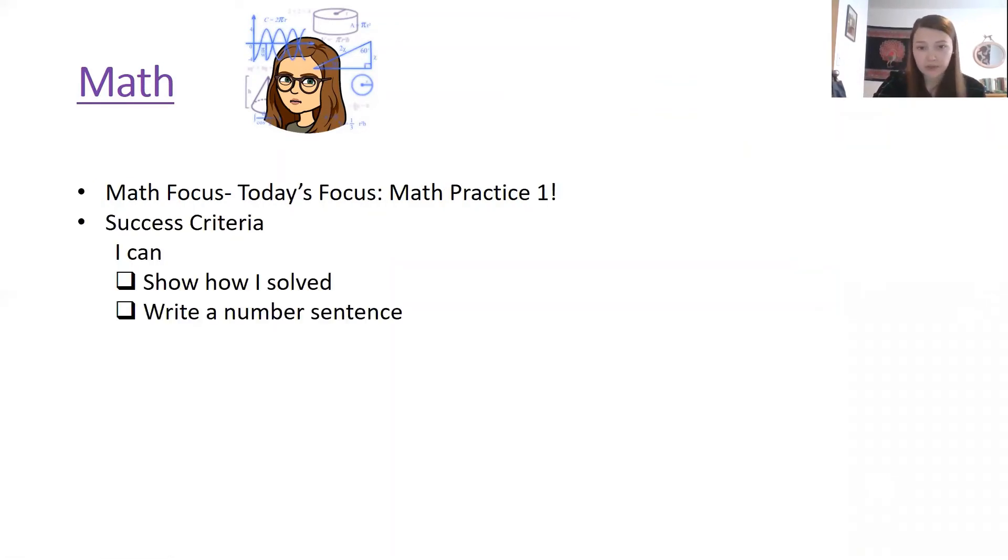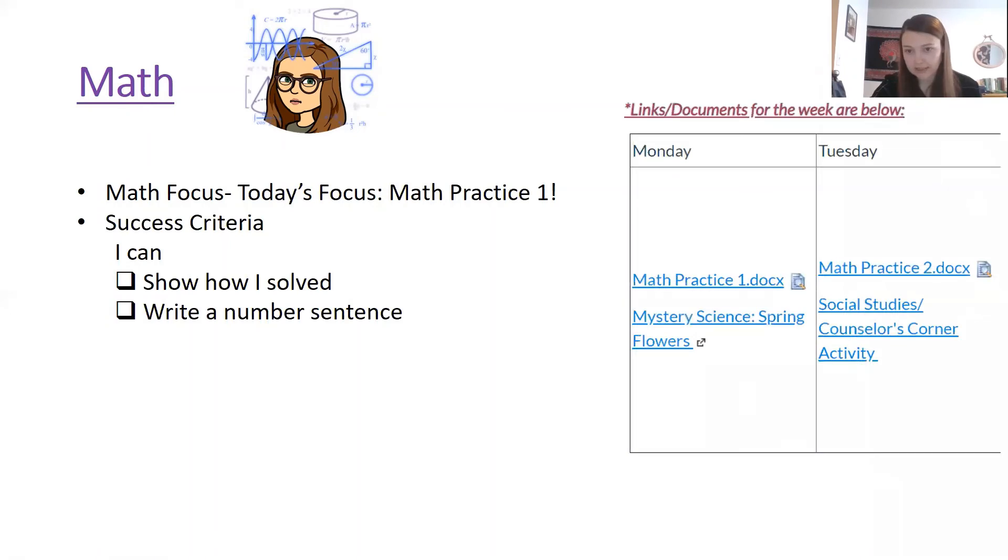Our math focus today is math practice one which you'll find on our canvas page and your success criteria is I can show how I solved and write a number sentence. So to find math practice one you just need to go to our canvas page and find the table with our documents and click on math practice one which is right at the top here in Monday's documents right above mystery science spring flowers.